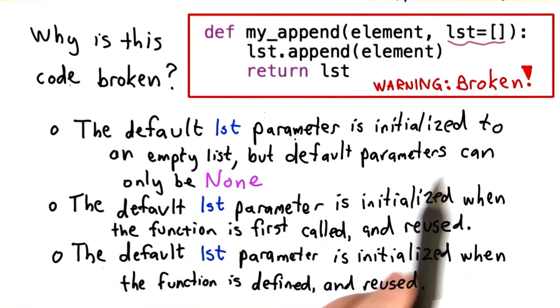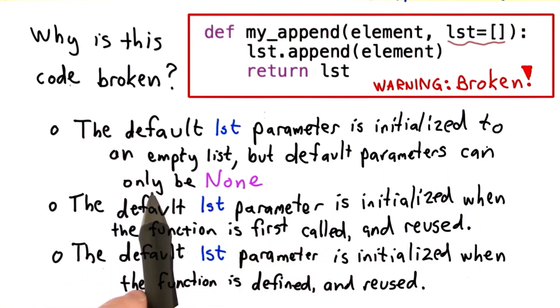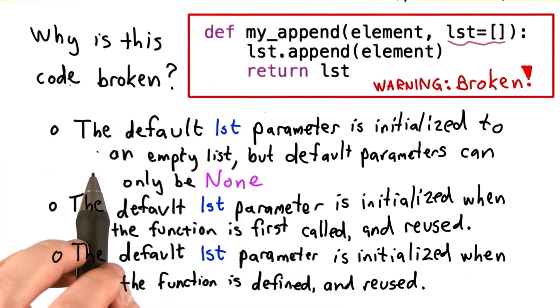The default parameter is initialized to an empty list, but default parameters can only be None. The second choice is the default parameter is initialized when the function is first called, and then that same value is reused each time. And the third choice is the default list parameter is initialized when the function is defined, and that same object is reused for each call. See if you can figure out which is the reason this code doesn't behave as desired.